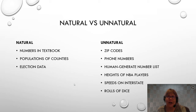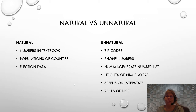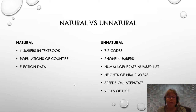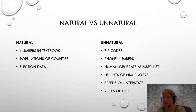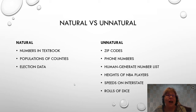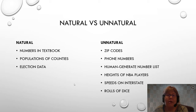The unnatural category helps us define what we can and can't use. For natural examples: if we took all the numbers in a heavy number-based accounting textbook, chapters one through fifteen, and put them in a data set, they would generally follow Benford's Law. Populations of countries — definitely not human generated — also fit. And election data: if you look on our textbook author's YouTube site, he does some analysis of the 2016 and 2020 election data.